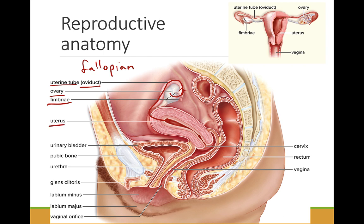The uterus is a thick, muscular organ connected to both uterine tubes at the top and joined to the vagina at the cervix at the bottom. The embryo develops in the uterus, which can stretch to accommodate the growing baby. The lining of the uterus is called the endometrium.